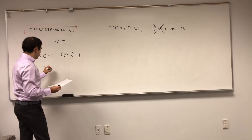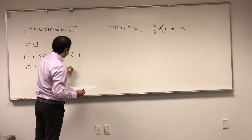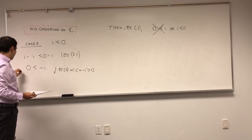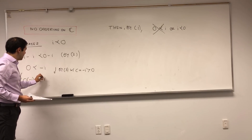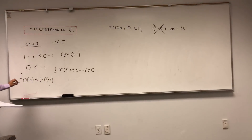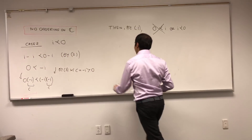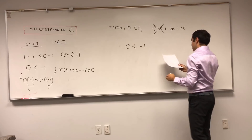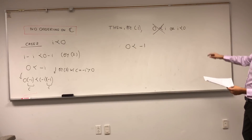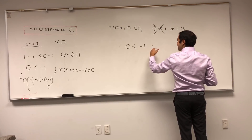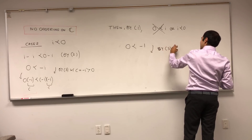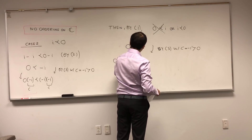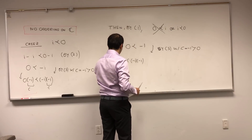By property 3 with c equals minus i, which is positive, we multiply: 0 times minus i is less than minus i times minus i. The left-hand side is 0. The right-hand side is minus i squared, which is minus 1. So 0 is less than minus 1. We can then multiply by minus 1 using property 3 with c equals minus 1, which is now positive, to get 0 times minus 1 is strictly less than minus 1 times minus 1. So 0 is less than 1.